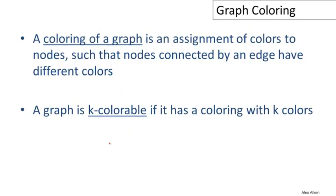First, a couple of definitions. A graph coloring is an assignment of colors to nodes such that the nodes connected by an edge have different colors.